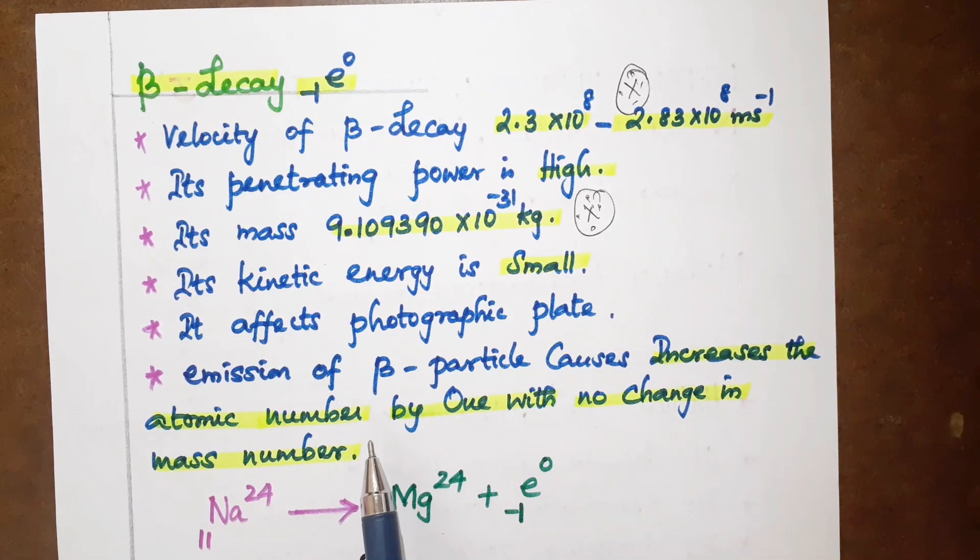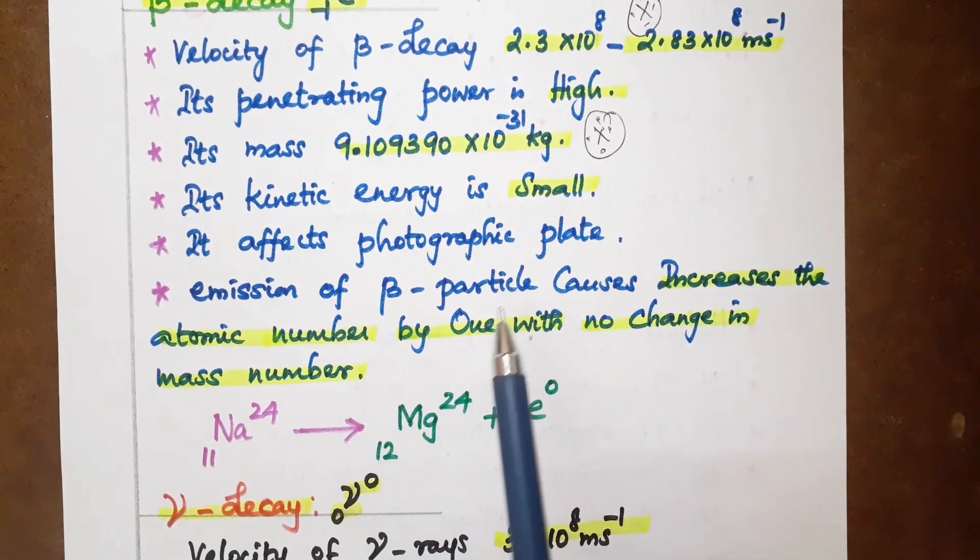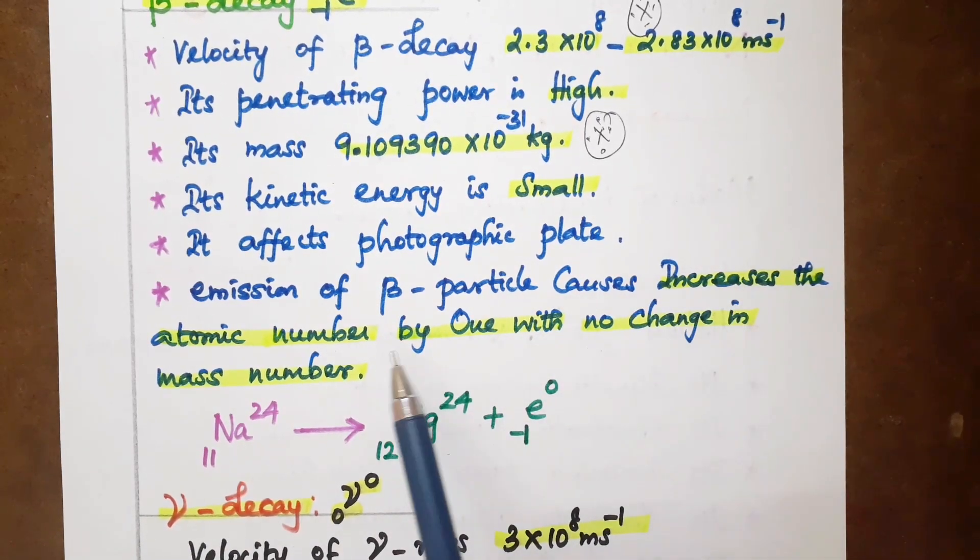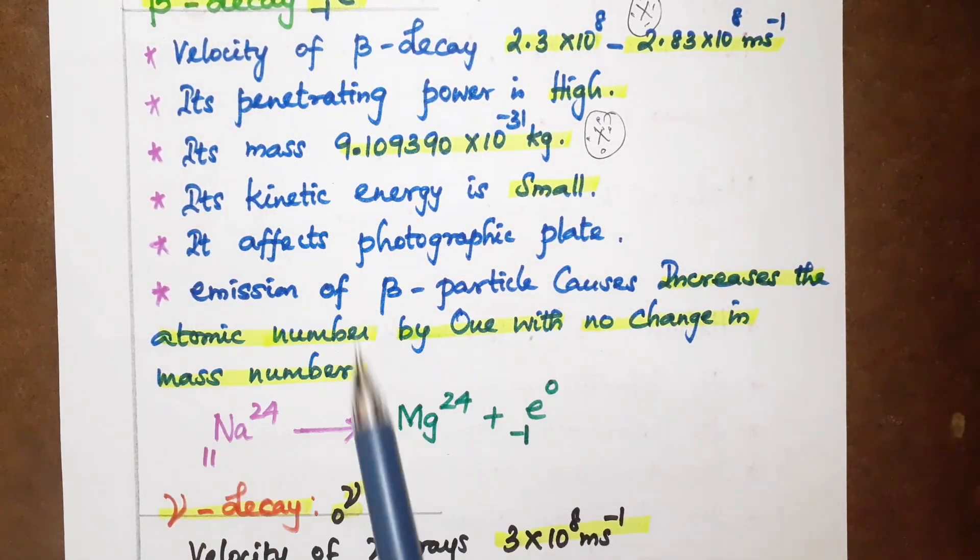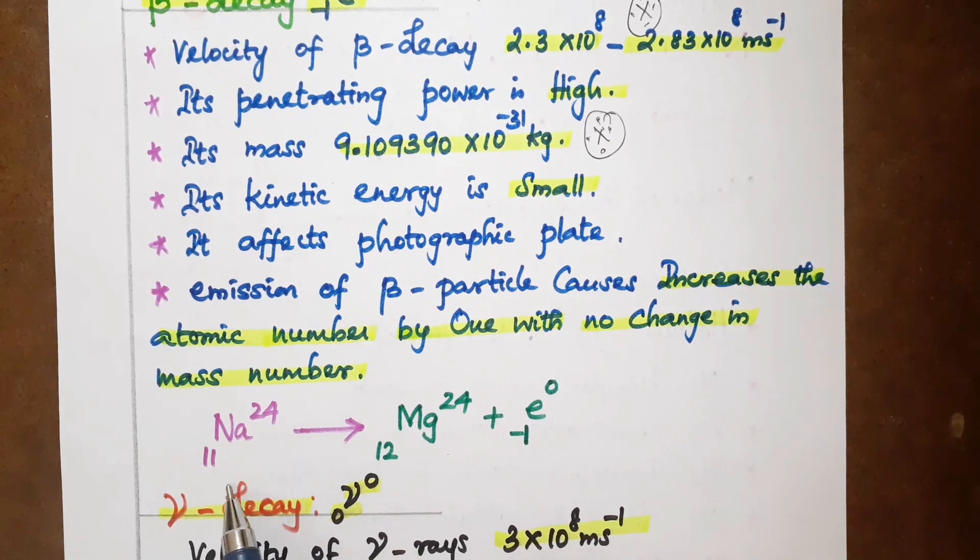It affects photographic plates. Beta particle emission increases atomic number by 1 with no change in mass number. Example: sodium Na-24-11 goes to magnesium Mg-24-12 plus e-0-minus-1. This is beta decay.